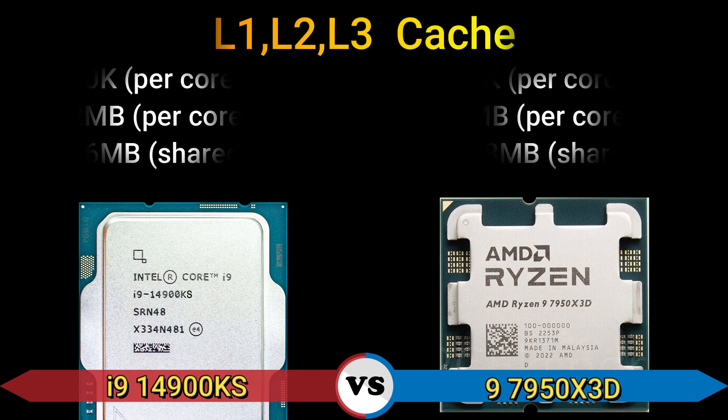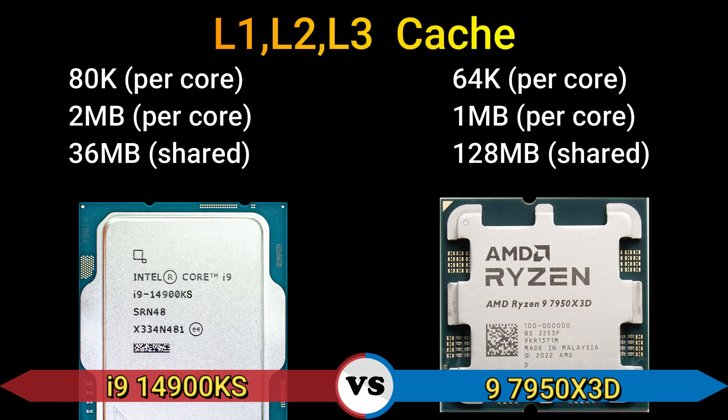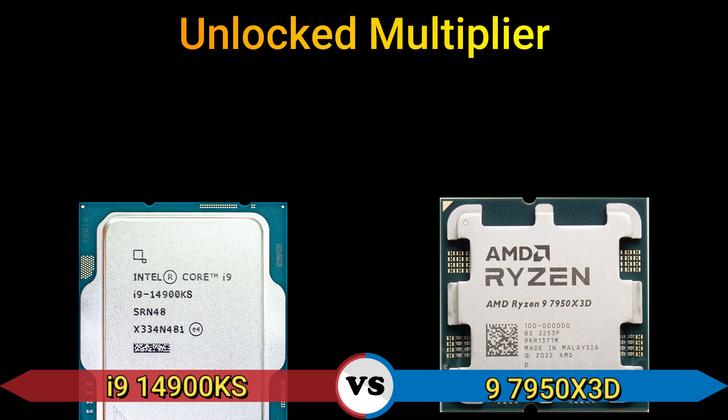L1, L2, L3 cache: 80 KB per core, L2 2 MB per core, L3 36 MB shared; and 64 KB per core, L2 1 MB per core, L3 128 MB shared. Unlocked multiplier: yes.